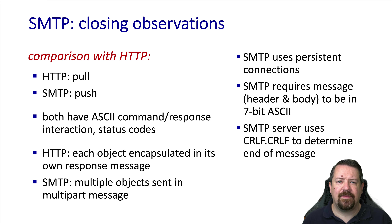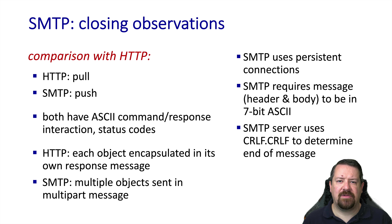SMTP has some similarities to HTTP. One difference is that HTTP is focused on pulling information from the server to the client, whereas SMTP is focused on pushing data — meaning messages — from the client to the server. Both are ASCII-based and use command-response interactions, but where HTTP is focused on retrieving a single object per interaction, SMTP is designed from the get-go with a multi-part structure. SMTP also has the oddity of only supporting 7-bit ASCII, which supports printable characters but is an inherent limitation for transferring binary data.